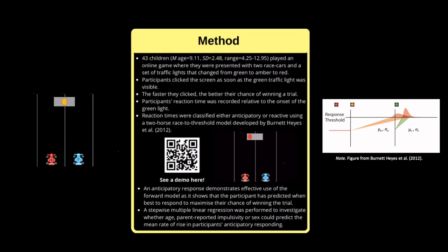In contrast, the reactive decision-making process occurs in response to the presence of the green light and occurs rapidly to the response initiation threshold. This is represented by the green line on the graph.